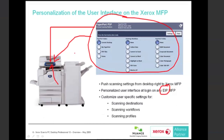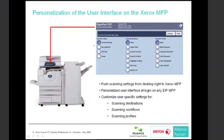I'm going to take a deeper dive and talk through each of the categories that you can personalize on the PSP user interface. The first category is the list of PaperPort folders. This gives everyone in your office the ability to select, at the time of scan, exactly which folder on their desktop PC they want their scanned image delivered into.